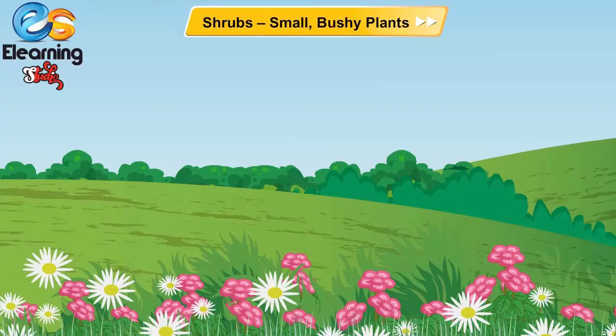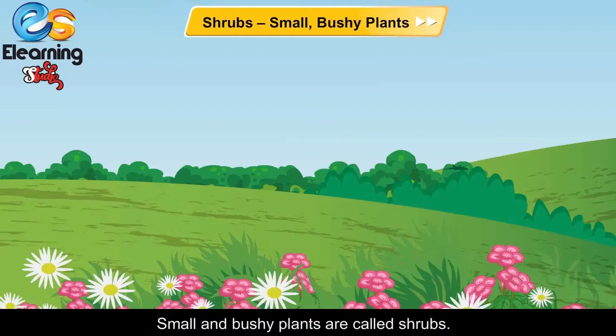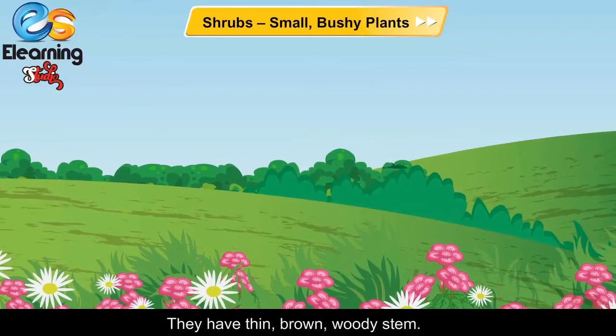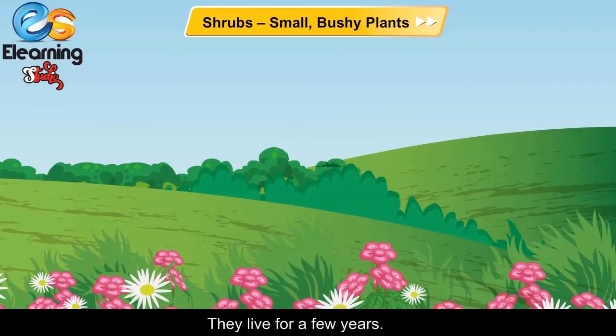Shrubs: Small and bushy plants are called shrubs. They have thin, brown, woody stem. They live for a few years.